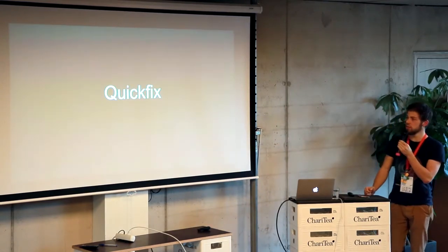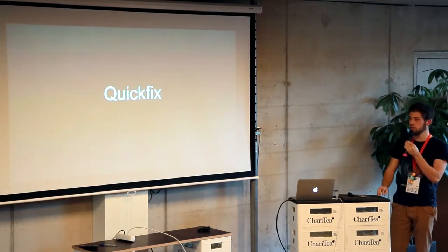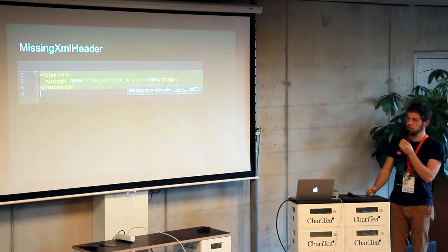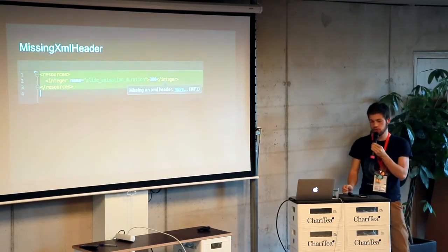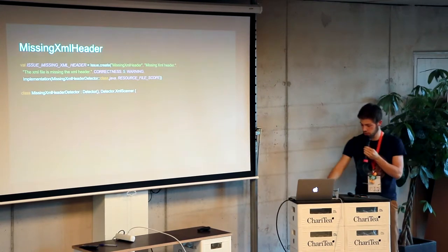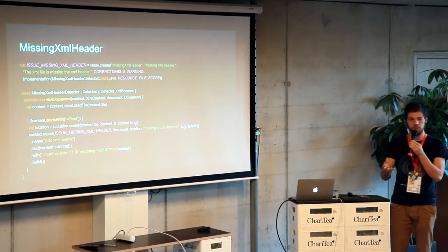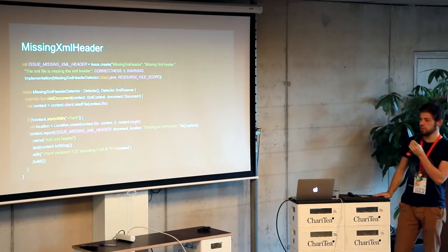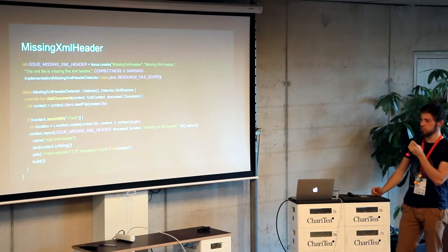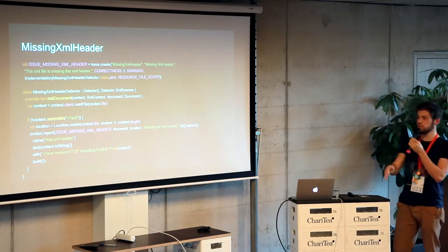Another awesome thing added in 3.0 is quick fixes. Basically from our Lint check we can supply quick fixes ourselves. Another check is for a missing XML header - we want to add the XML header. Again we create our issue, our detector, XML scanner. We visit the document and from the context we get the current file we're seeing. We read that file and if it doesn't start with the XML header, we know we need to add it. The first thing is to create a location by hand - there's the Location class where we say on that file from position zero all the way to the content length - that is the entire location that's going to be flagged.